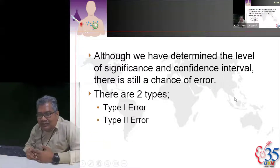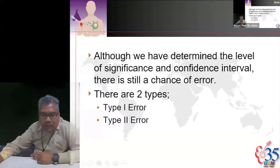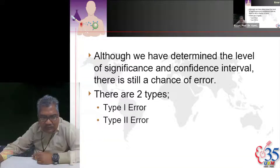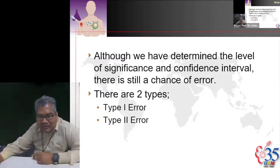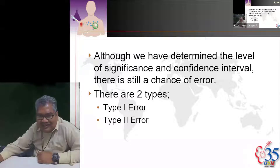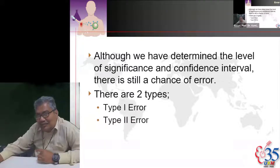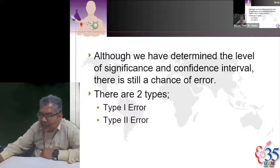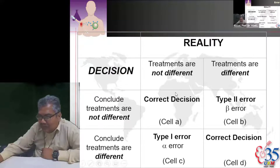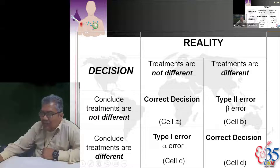Although you have determined the level of significance and confidence interval, there is still a chance of error. The errors are type 1 and type 2. If you conclude the treatments are not different and the treatments are truly not different, that is a correct decision. The problem arises when you conclude it is not different but in reality it really is different.